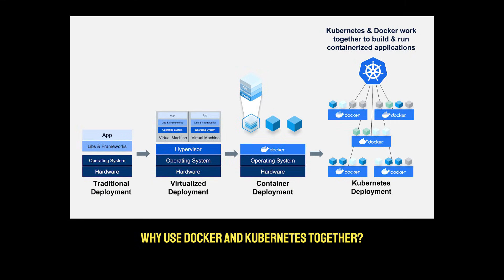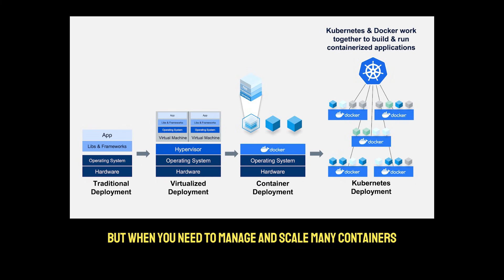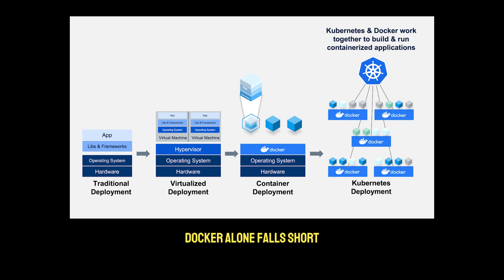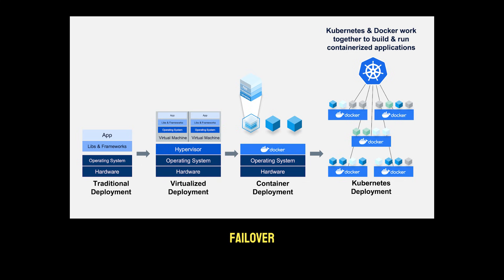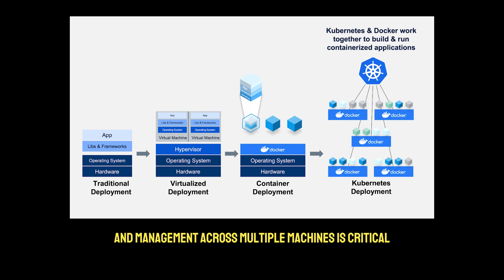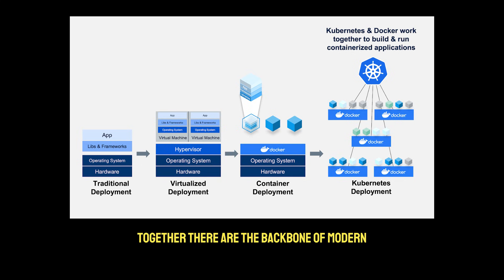Why use Docker and Kubernetes together? Docker alone is perfect for single container apps and local development environments, but when you need to manage and scale many containers, Docker alone falls short. Docker and Kubernetes together are essential for production environments where automated scaling, failover, and management across multiple machines is critical. Docker simplifies building and testing apps, while Kubernetes ensures those apps run reliably at scale — together, they're the backbone of modern cloud-native applications.